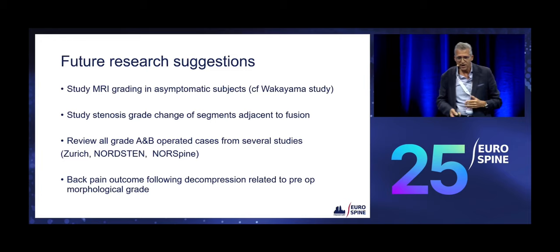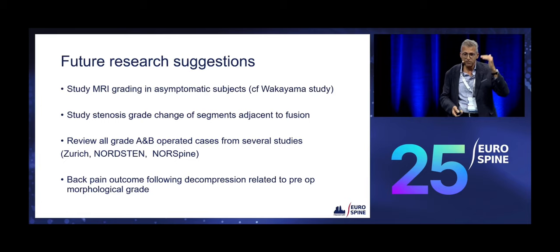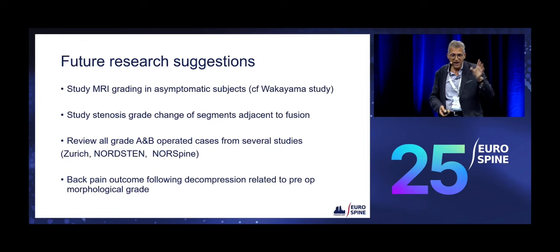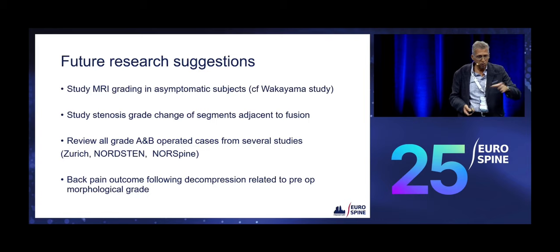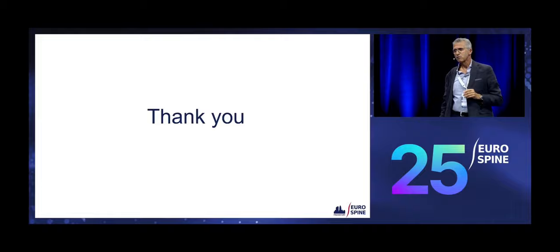For young surgeons here — please copy this slide as future research ideas: do a population study with grades to see how often you see C and D grades in asymptomatic patients; examine grade change over time adjacent to fusion; review all A and B operated cases from the Nordsten, Zurich, and Nordspine studies to understand why those patients get better; and study back pain outcomes for decompression related to pre-op grade.